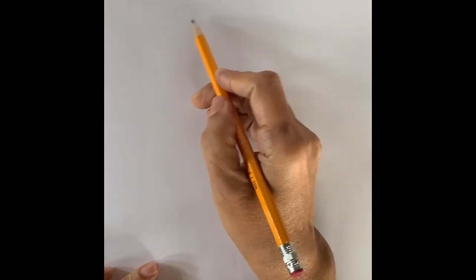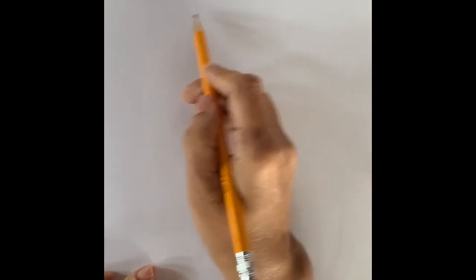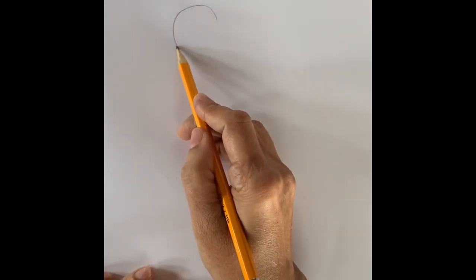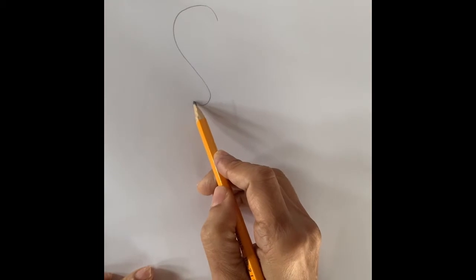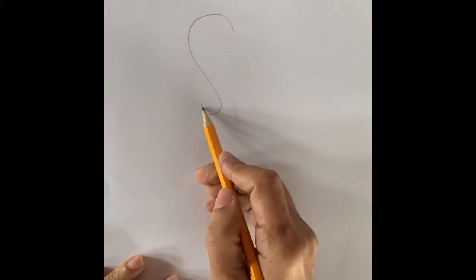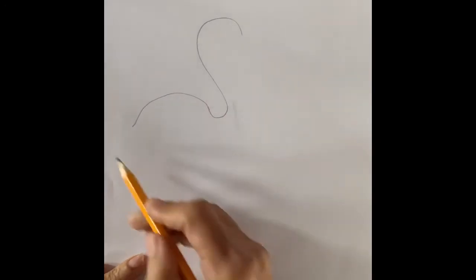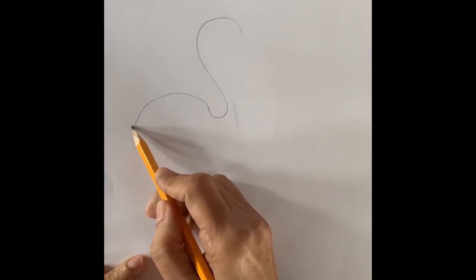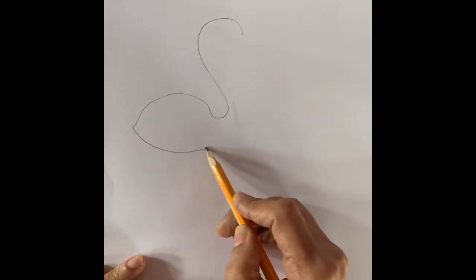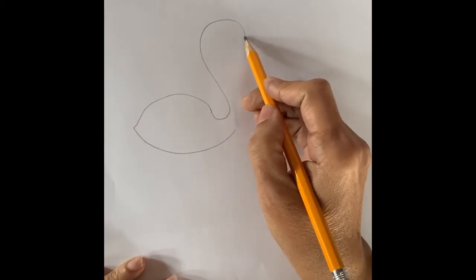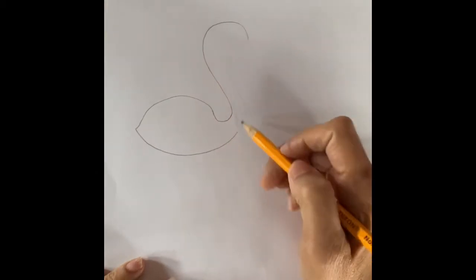To draw a flamingo, we will be needing one paper, one pencil, a few colors, pen or marker, whatever you have. Now, let's draw a flamingo.